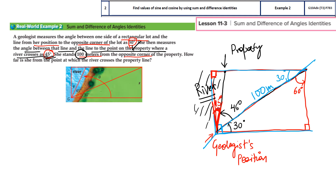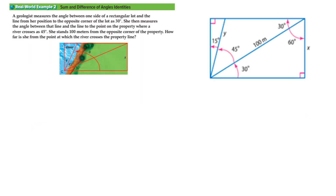So now we are done with the second step of the question — understanding, marking, highlighting, and planning. We are ready to solve. We are going to definitely use trigonometry, and since this is lesson 11.3 on sum and difference, one of the identities will be used. Because we see angle 15 here, it's quite probable we are going to use the difference identity, representing 15 degrees as 45 minus 30.